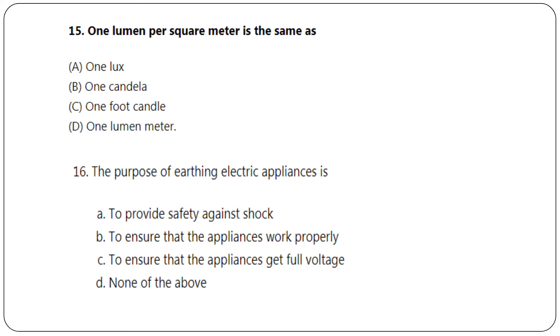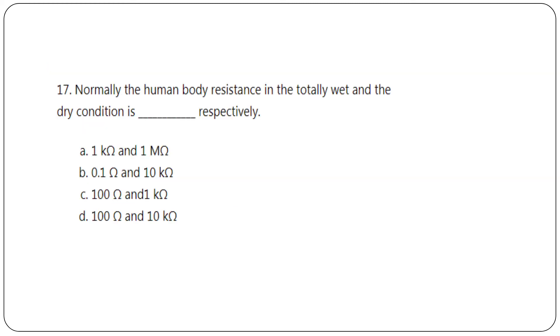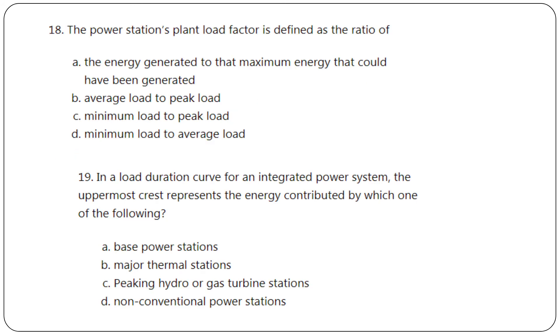Lumen per square meter is same as one lux. The purpose of earthing electrical appliances is to provide safety against shock. Normally, the human body resistance in totally wet and dry conditions is respectively 1 kilo-ohm and 1 mega-ohm. The power station plant load factor is defined as the ratio of average load to peak load.